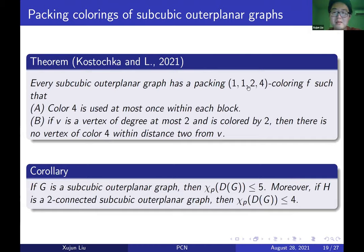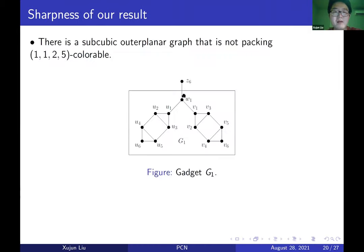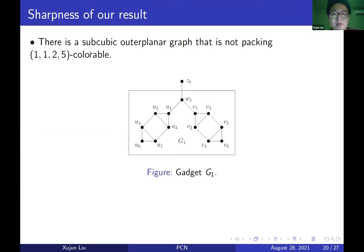As a corollary, if G is a subcubic outer planar graph, the conjecture is confirmed; and for 2-connected subcubic outer planar graphs, the upper bound can be dropped by 1. The result turned out to be 1-1-2-4, with 1-1-2-5 being impossible — and I would like to show the construction proving this.